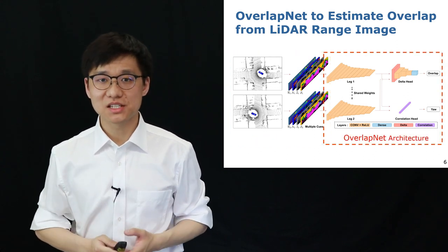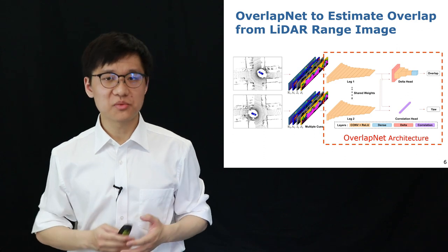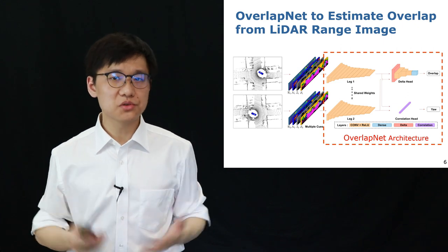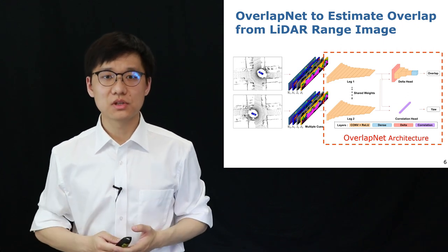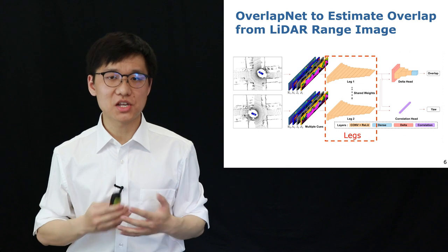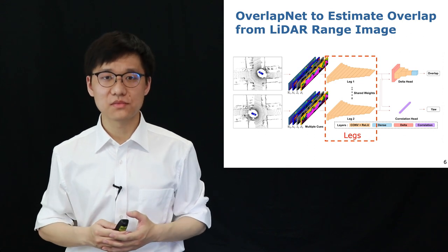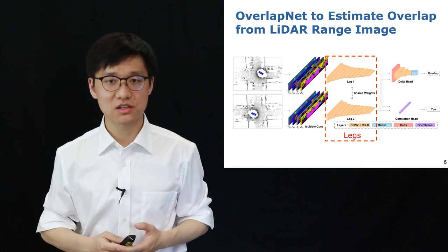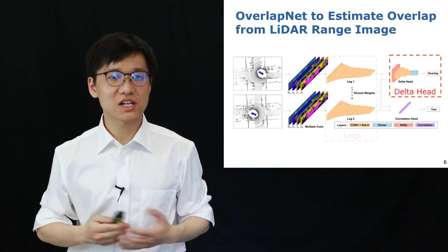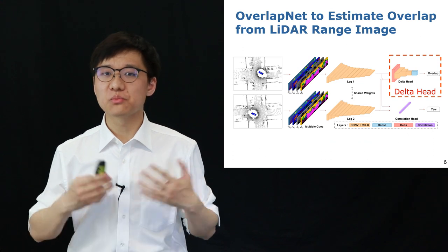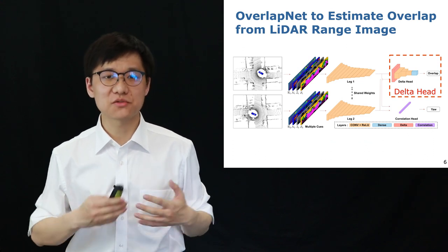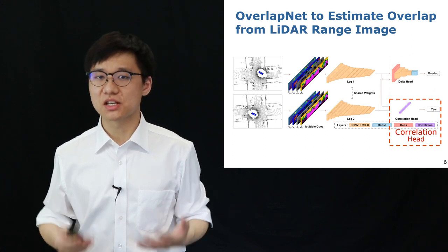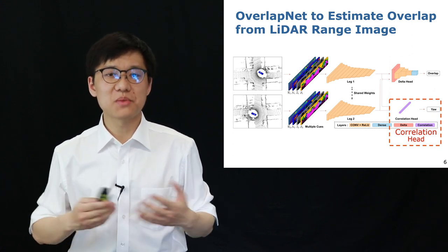On the right hand side you see the architecture of the OverlapNet, which is a modified Siamese network. It consists of two legs and two heads. The two legs have the same architecture and they share all weights. The two heads use the same pairs of feature volumes generated from the two legs. One head is called the delta head, which is used to predict the overlap between pairs of scans. The other head is called the correlation head, which is used to predict the relative yaw angle between pairs of scans.